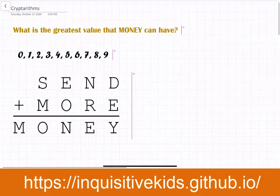Welcome to Kirin Quiz with Kids. In this video, we will be going over a cryptarithmetic problem. We have two addends, SEND and MORE, added together to get a sum of MONEY.